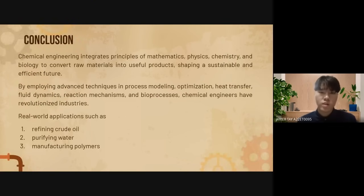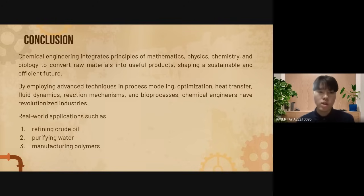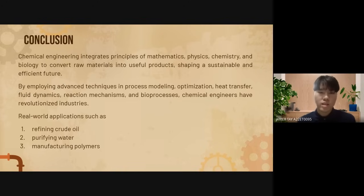In conclusion, chemical engineering is a versatile and impactful field that seamlessly integrates principles of mathematics, physics, chemistry, and biology to convert raw materials into useful products. From its foundational concepts to its practical applications, the discipline underscores its relevance in shaping a sustainable and efficient future. By employing advanced techniques in process modeling, optimization, heat transfer, fluid dynamics, reaction mechanisms, and bioprocessors, chemical engineers have revolutionized industries.